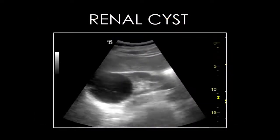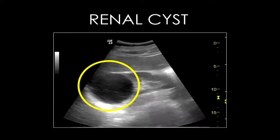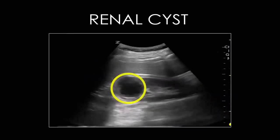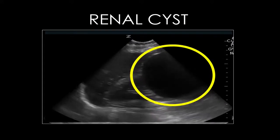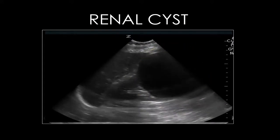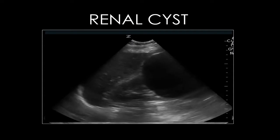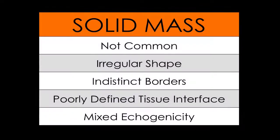This video is a longitudinal view of the right kidney with a simple cyst at the superior pole. Here is another simple cyst within the kidney. Here is a very large renal cyst; however, typically these do not bother patients and most of these masses are of little clinical significance. Solid renal masses have ultrasonic characteristics which are distinctly different from renal cysts. They are not common, they have irregular shapes and indistinct borders, there is a poorly defined interface within the renal tissue, and the sonographic appearance has mixed echogenicity.